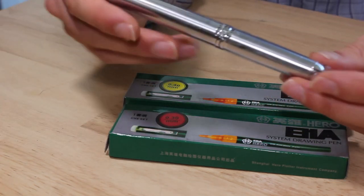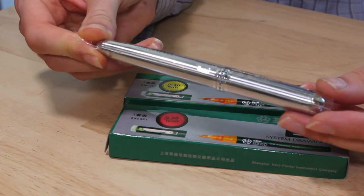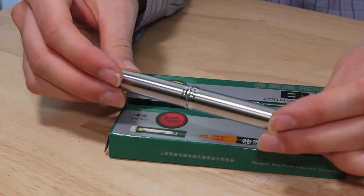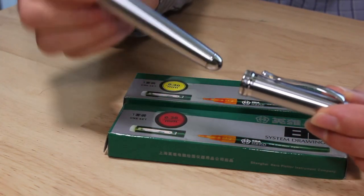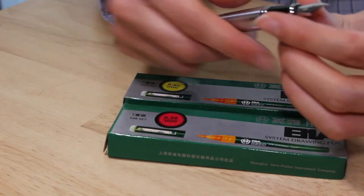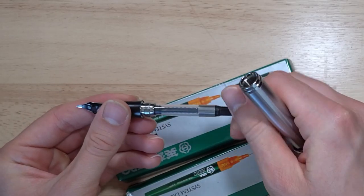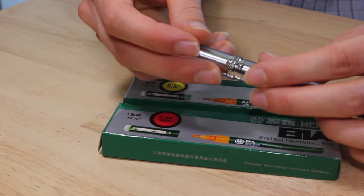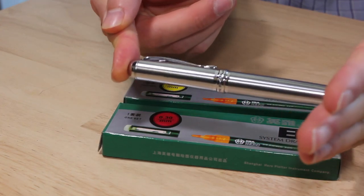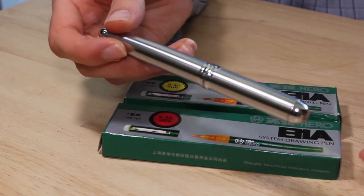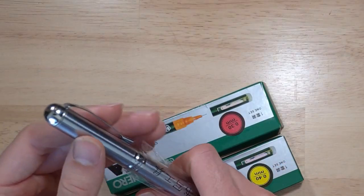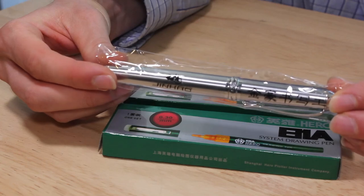Like I bought this Jinhao X750. This thing is an amazing looking feeling pen. Full metal construction. Look at that beautiful piston converter. It feels really well built. You could comfortably stand on this pen and nothing bad would happen. It's built like a tank and it only cost $5.